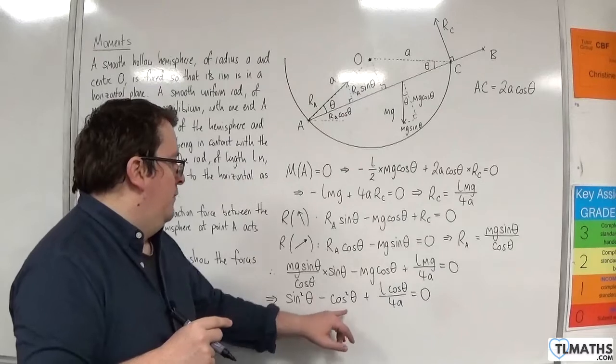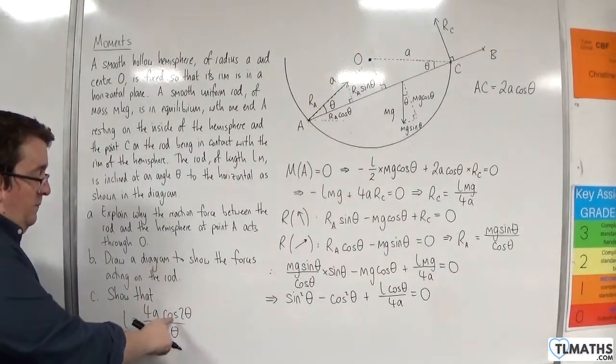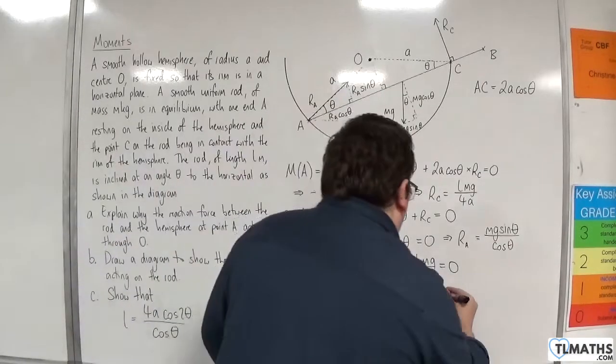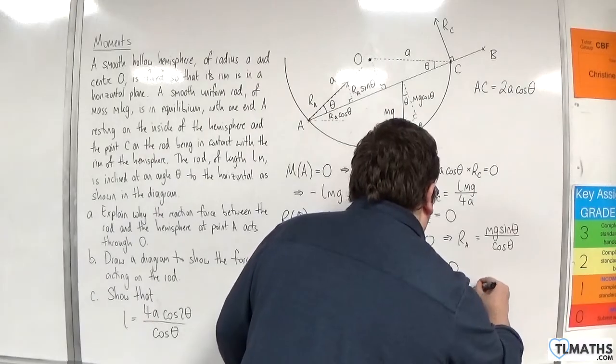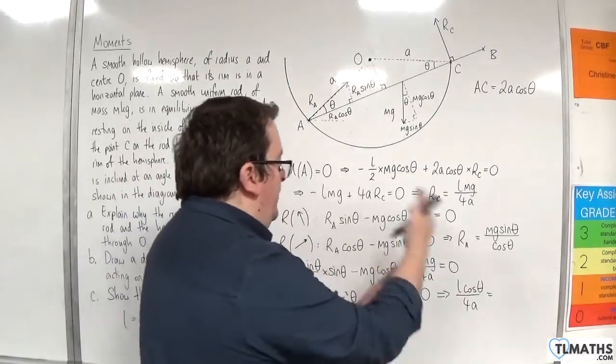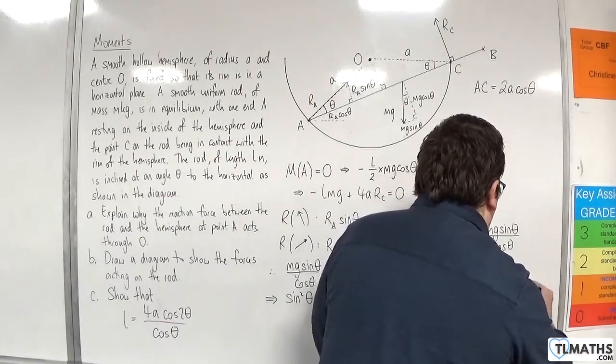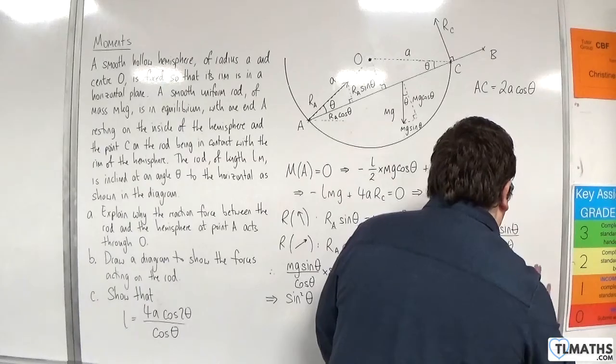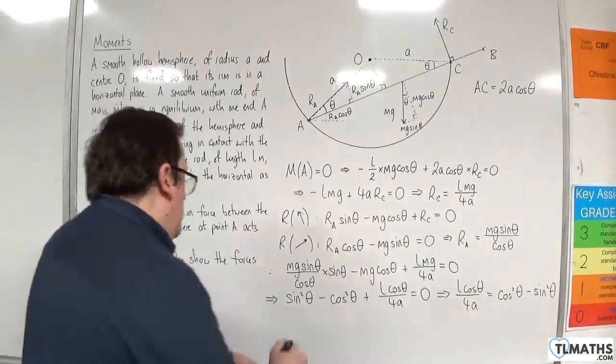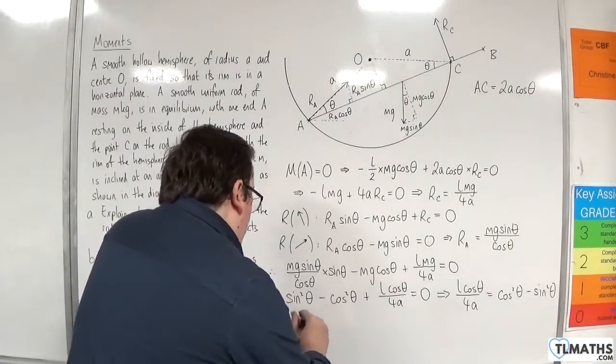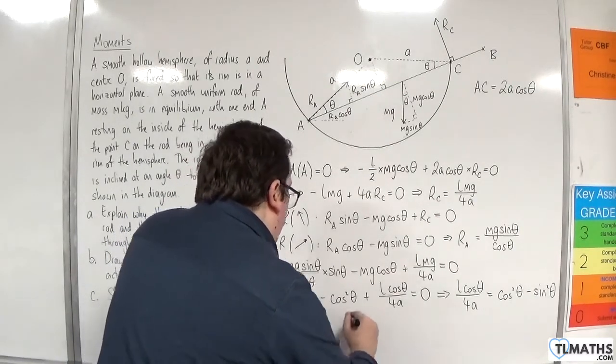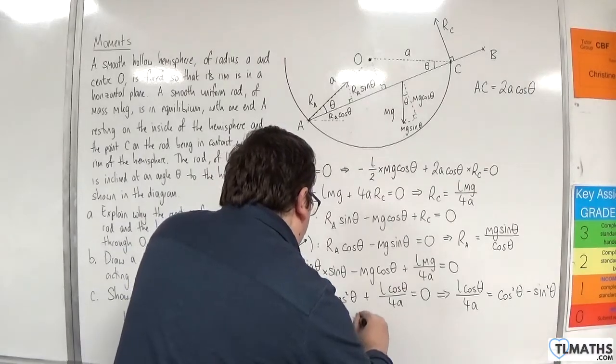Now, as you can see here, I've got sine squared take away cosine squared. Now, I know that cosine squared minus sine squared is cosine 2 theta. So what I'll do is I will move the sine squared take away cosine squared over to the other side to make cosine squared theta take away sine squared. So we now have L cosine theta over 4 A is equal to cosine of 2 theta, our double angle formula.